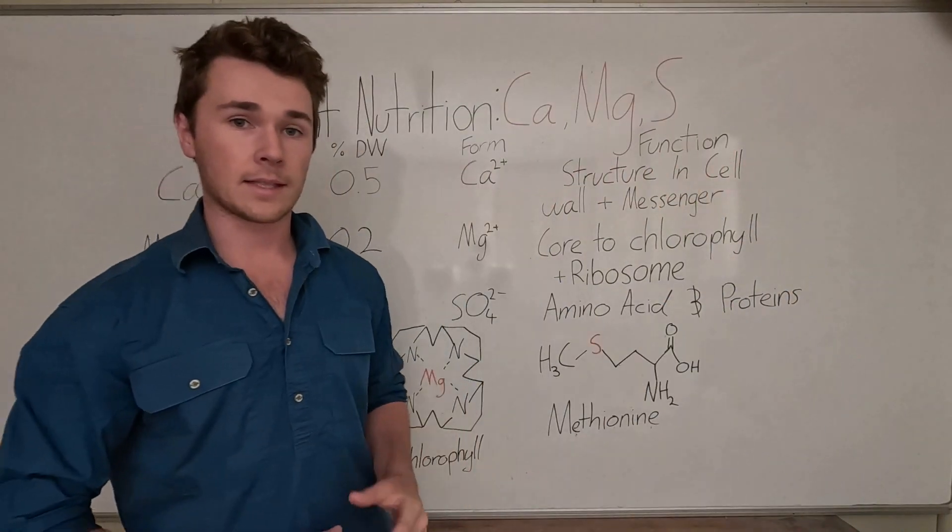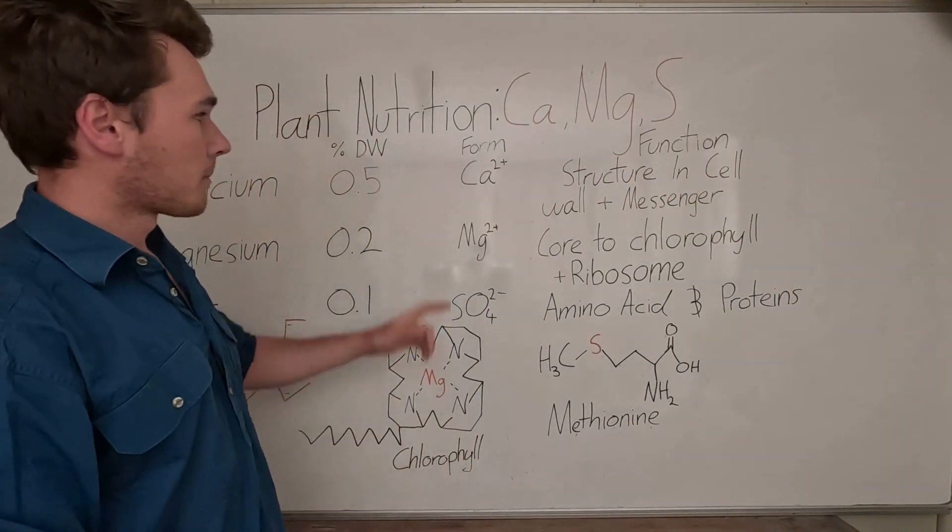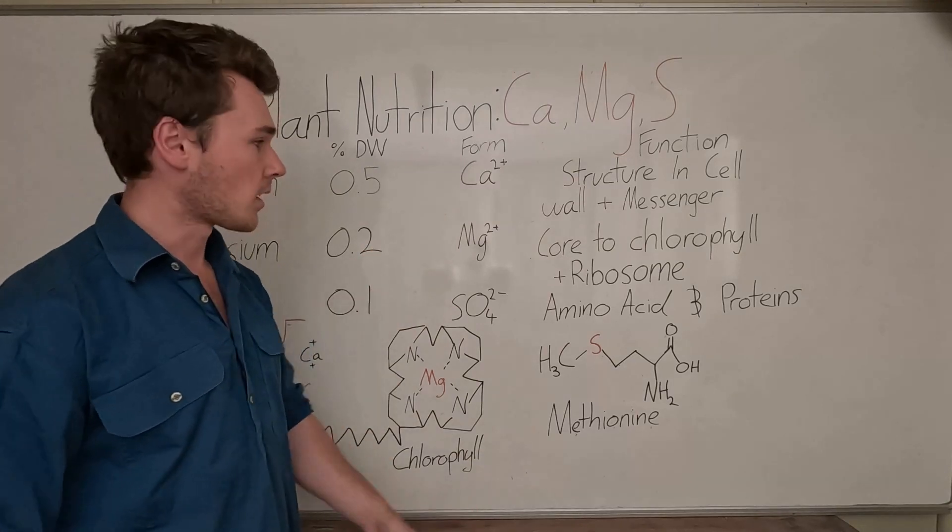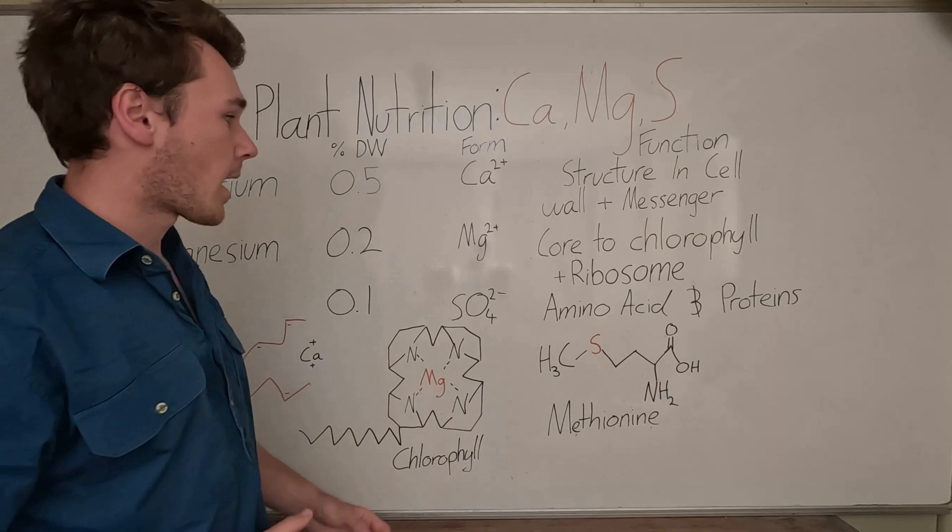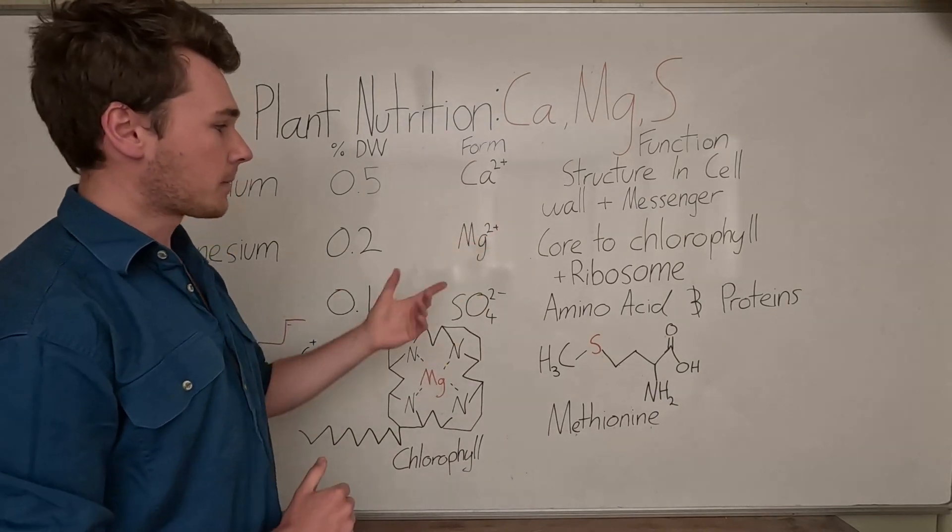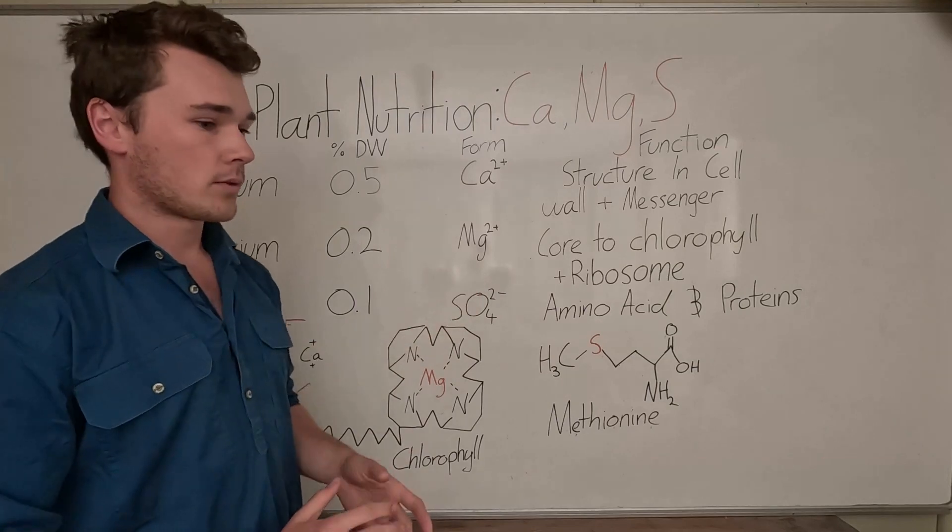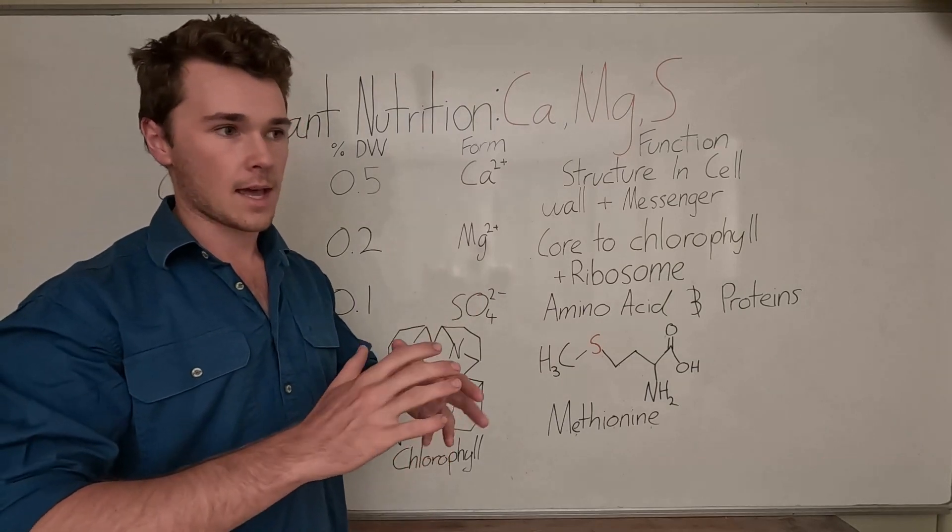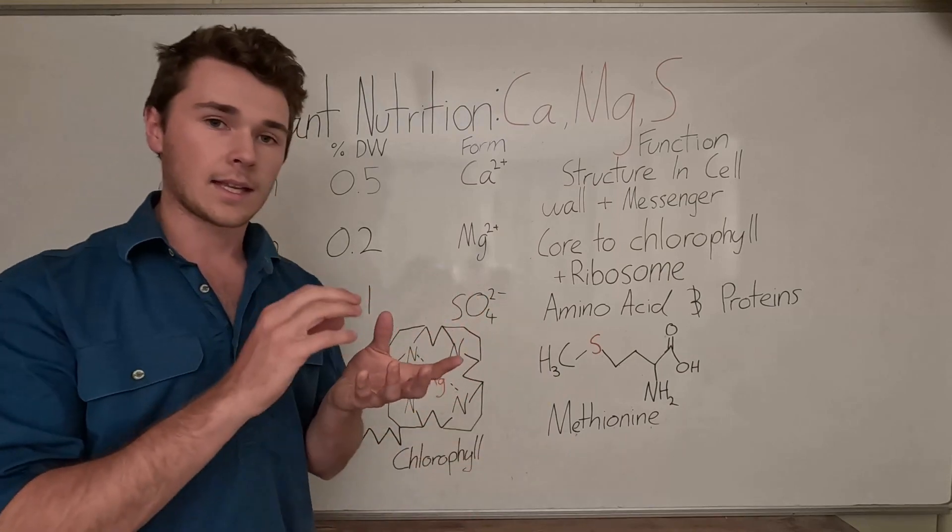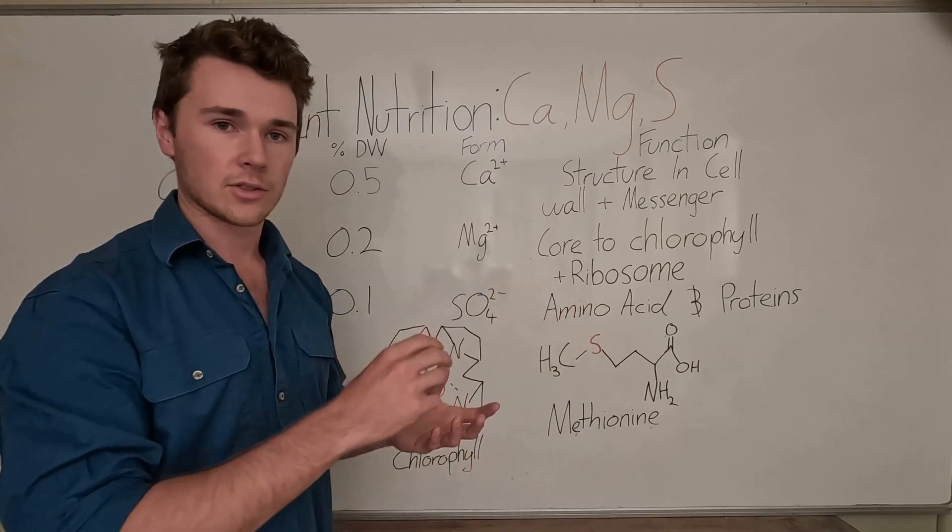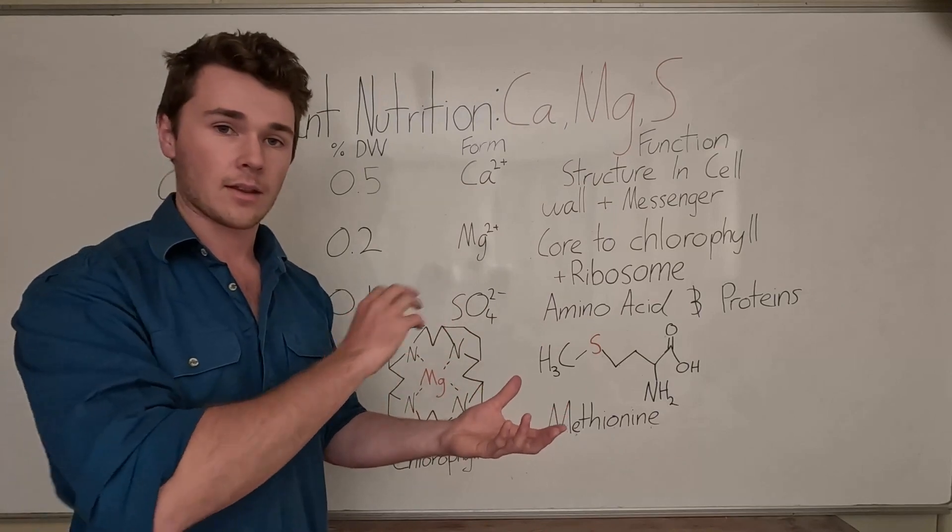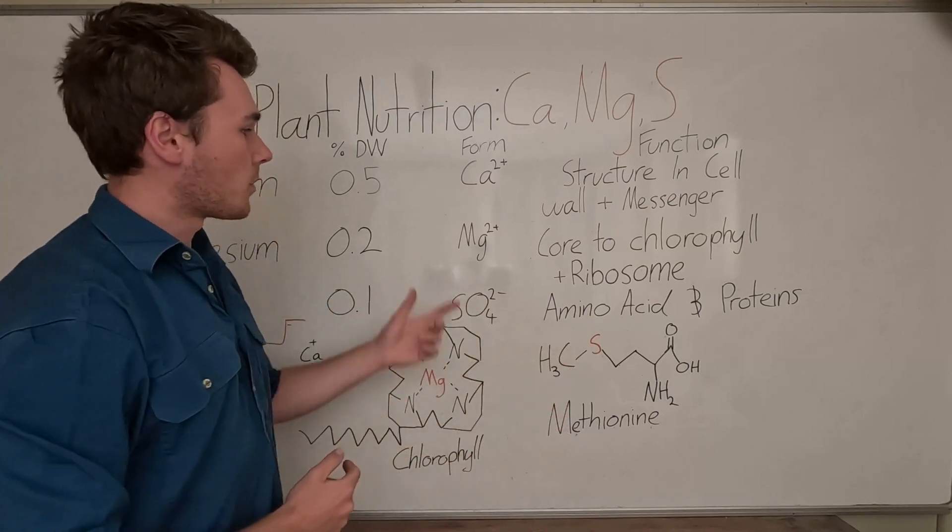In terms of the form that our plants get these nutrients in, both calcium and magnesium come in their cation form. So they're divalent cations, which means they have a plus two charge. And typically, these hang out on negative particles in our soil called colloids. They stick to that and get exchanged to our plant with hydrogen. So two hydrogen come out of the plant to exchange with our cations.